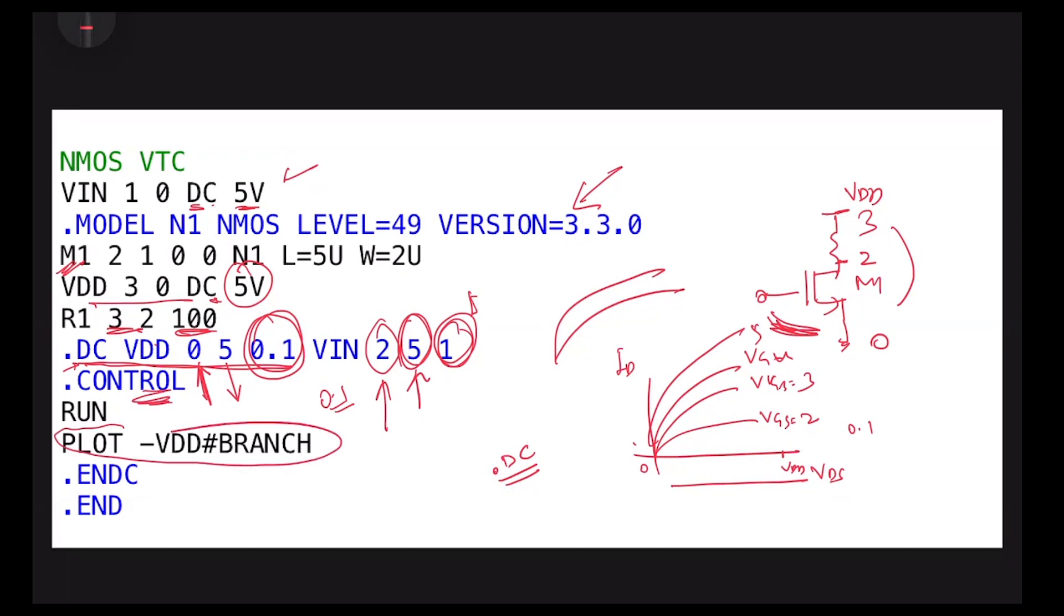The interesting thing here - this time I don't want to plot voltage. I want to plot the current through this. What I did - I use the current plot and minus VDD branch, the current in this branch. This is the syntax for that: minus VDD hash branch.